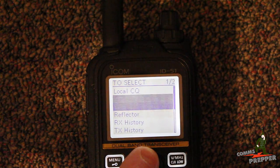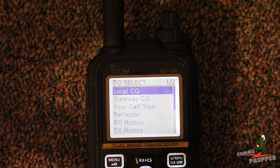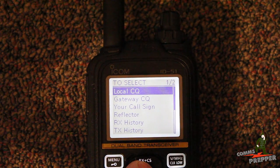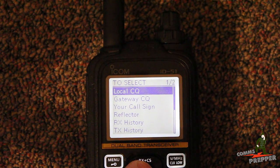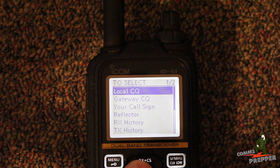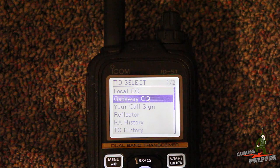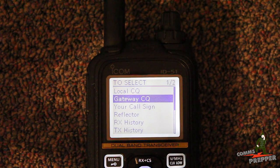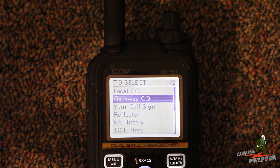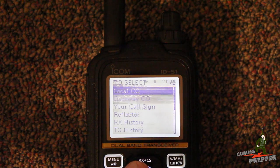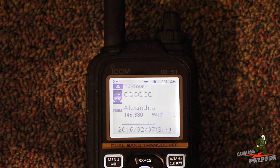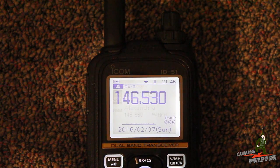Come over here to local CQ or gateway CQ. So if I hit local CQ, it sets the RPT or R2 line to the C mode. And if I go to gateway CQ, then it would change that second call sign line to W4HFH with the G. So we'll just set that to local. And now we're set up.